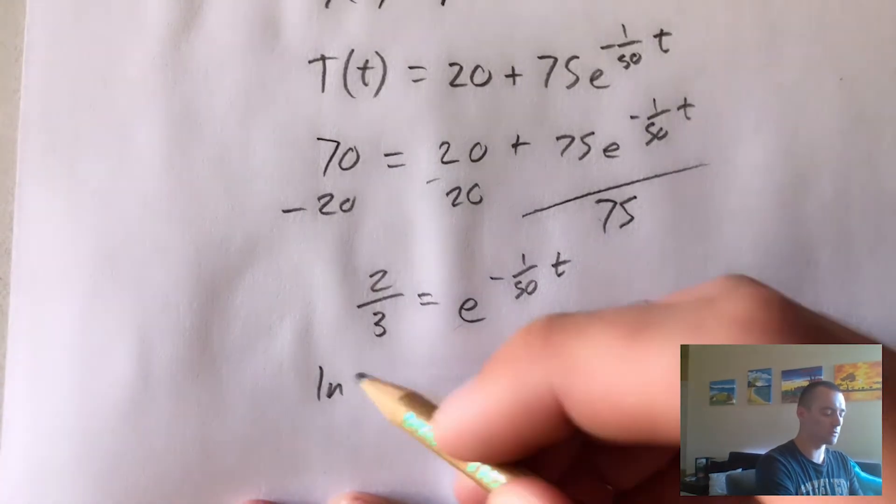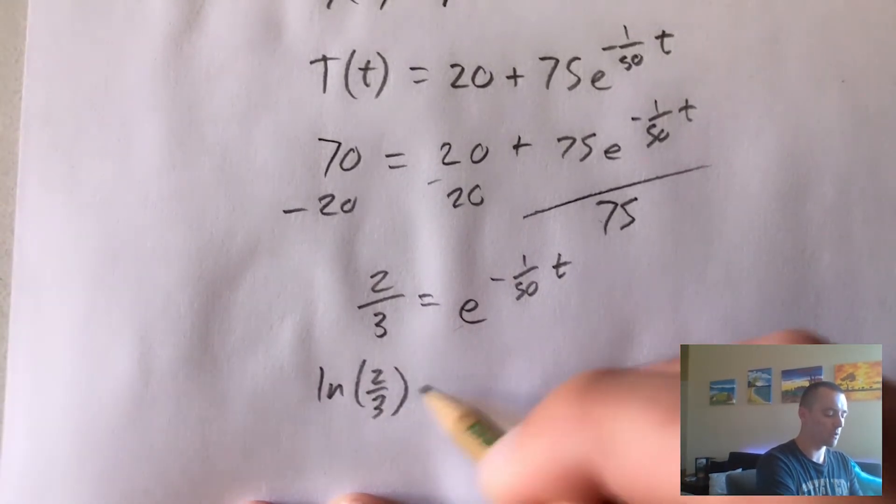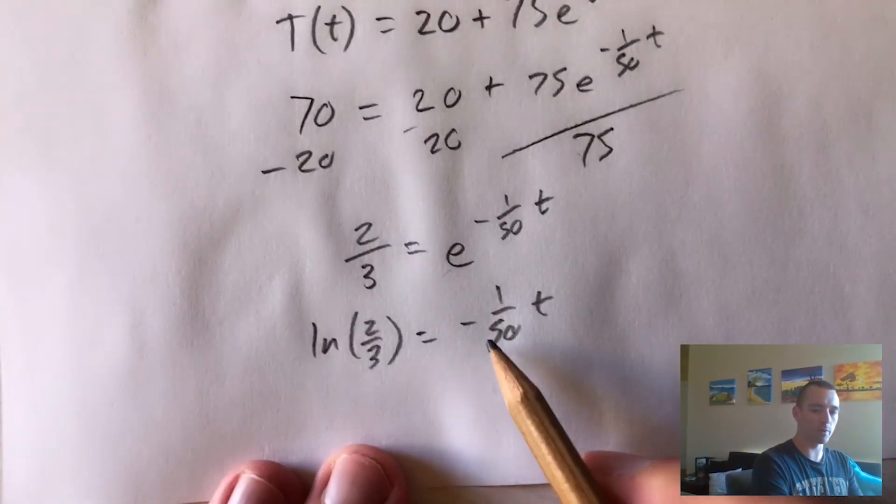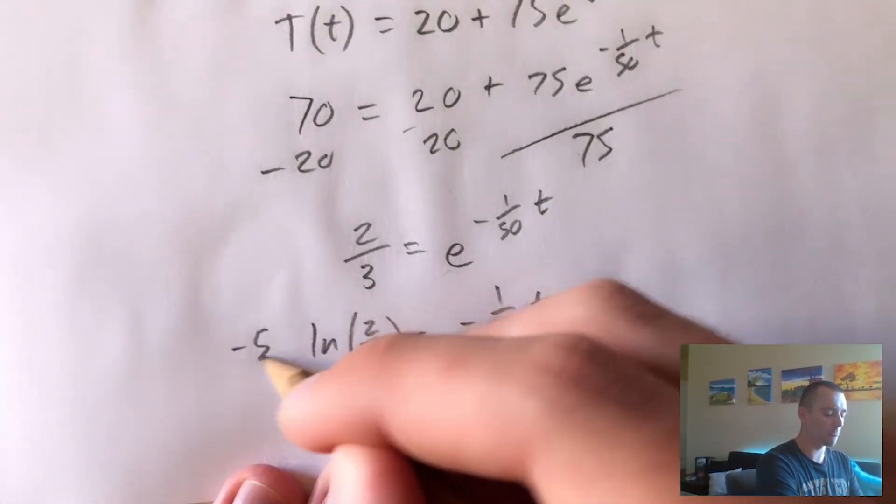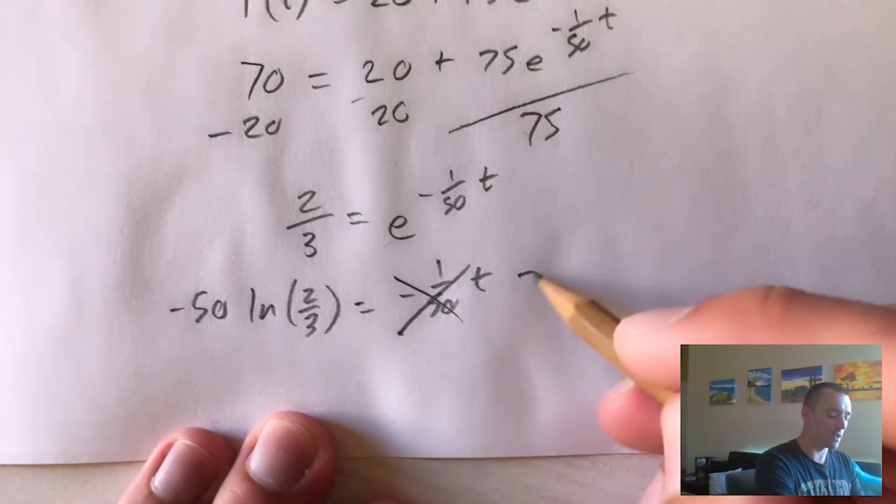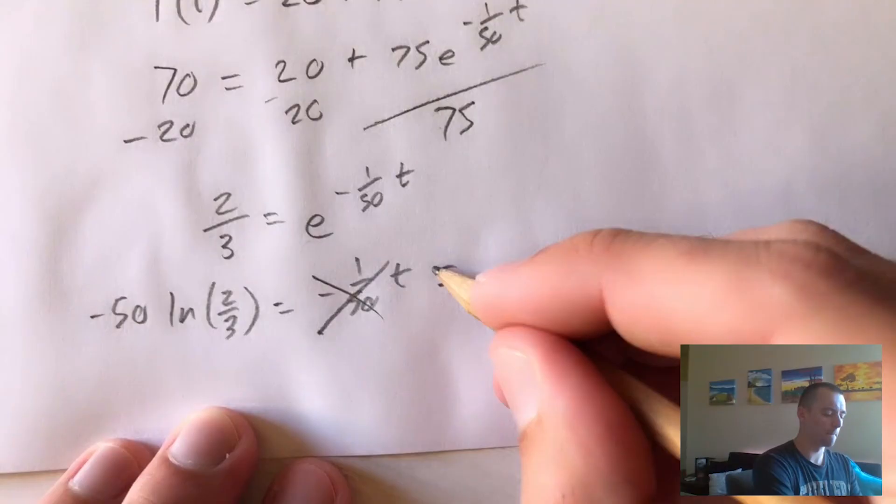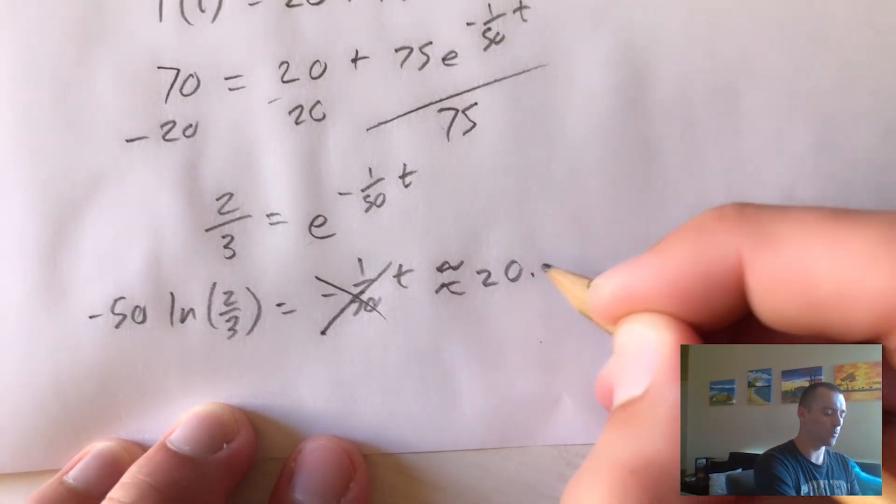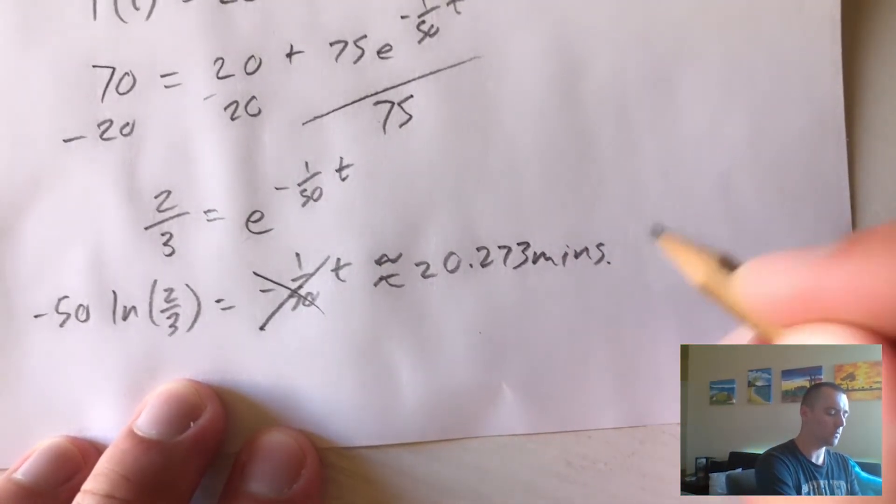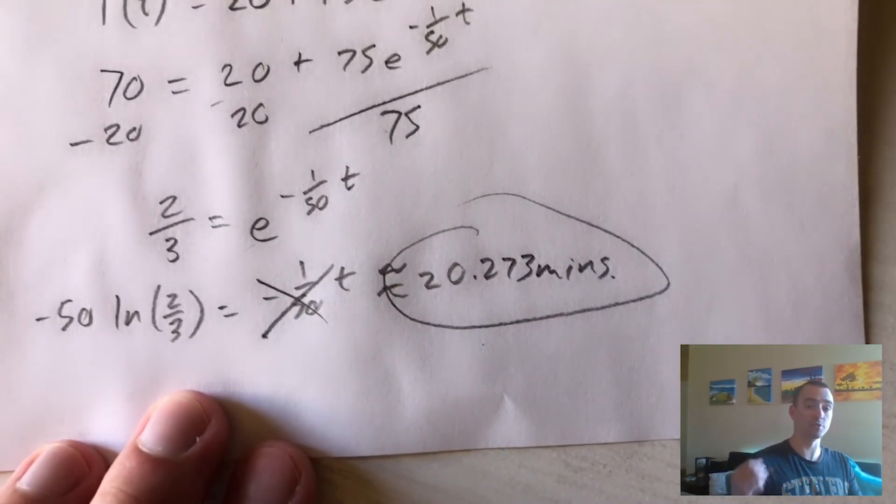And then we can multiply both sides by negative 50 to cancel that, telling us that it will take approximately 20.273 minutes for our coffee to get to 70 degrees.